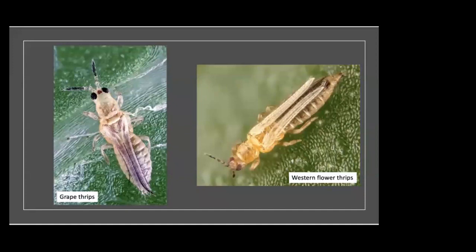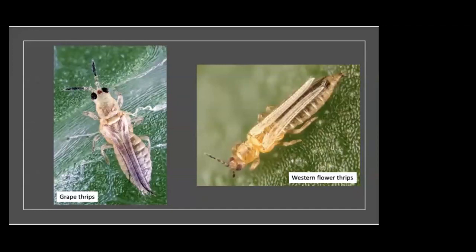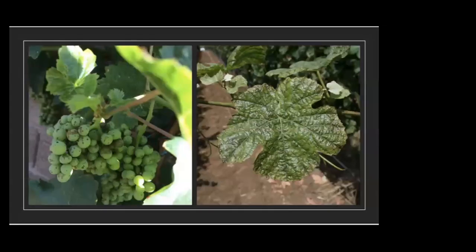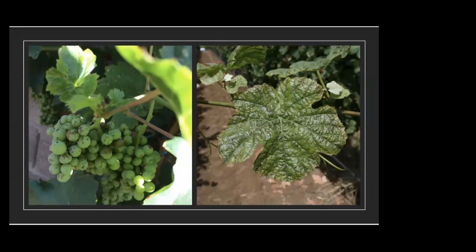Moving on to thrips. These insects are very small with rasping-sucking mouthparts. Two major species that can damage grapevines are the western flower thrips and the grape thrips. They're less than one millimeter in length and therefore difficult to see with the naked eye. Damage can be economic in table grapes because it can make the fruit unmarketable, but it's not economic most of the time in wine grapes. You can also see damage to the leaves from thrips feeding.